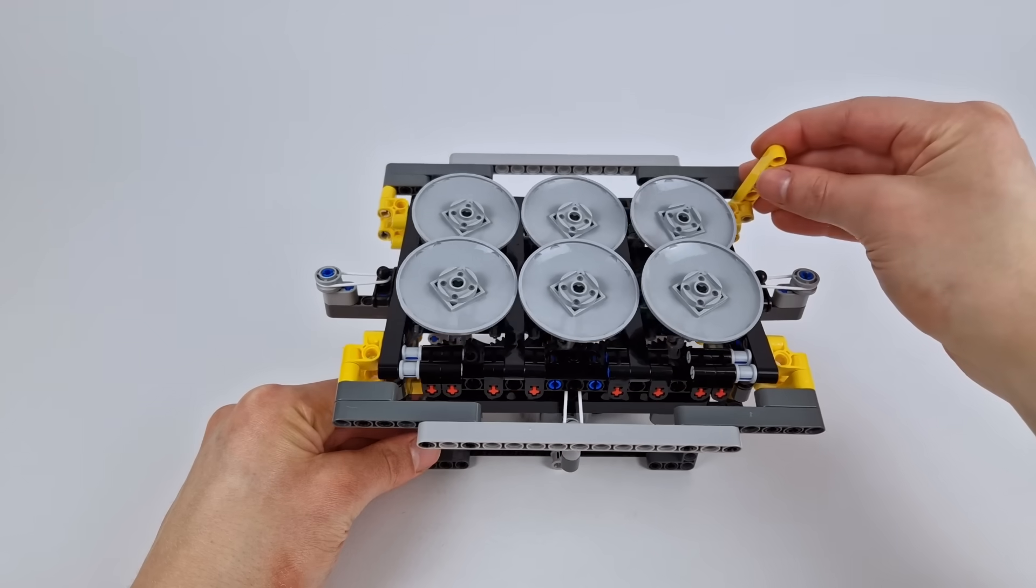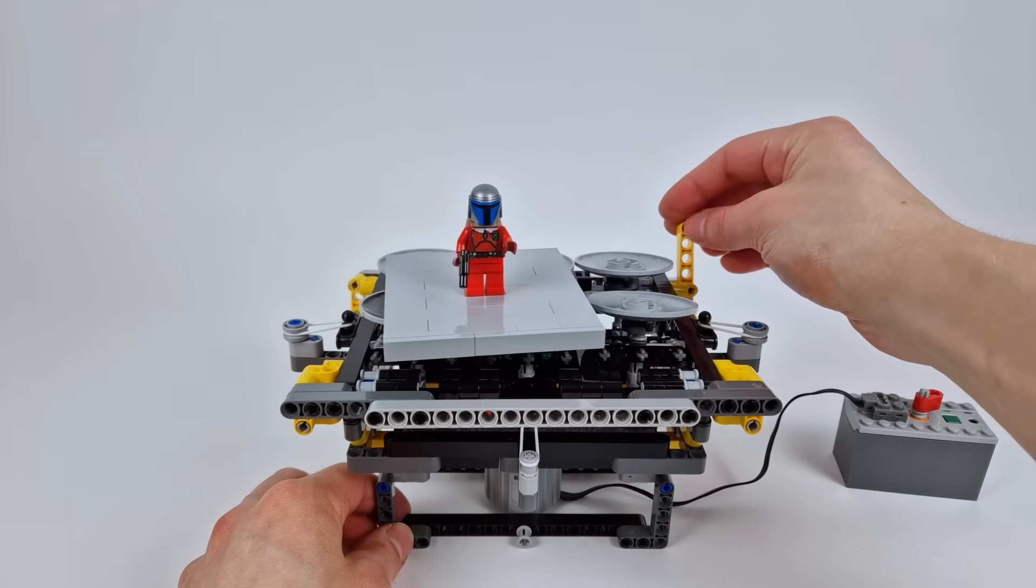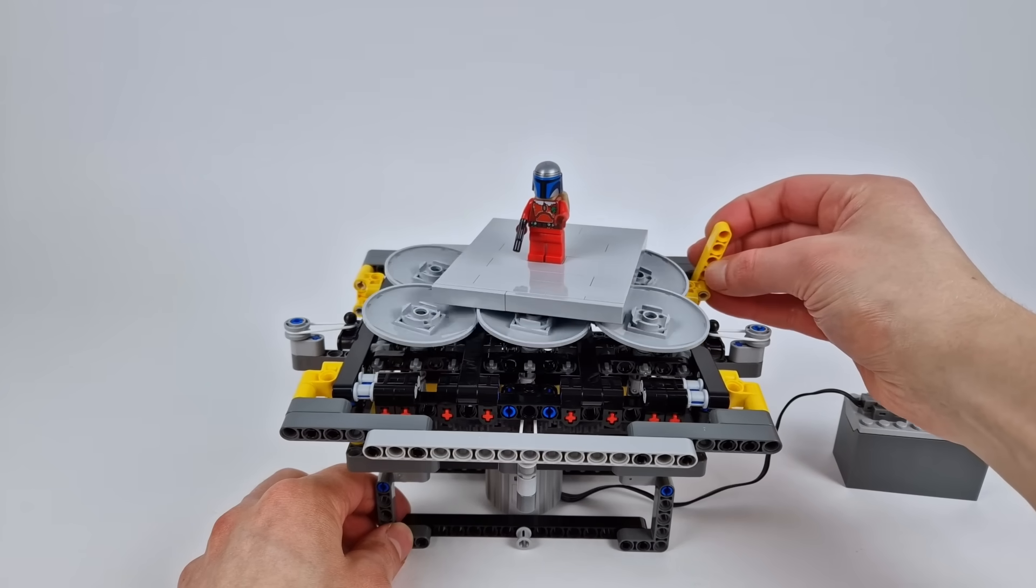A few months back, I built this interesting prototype for an omnidirectional treadmill. Depending on the angle I tilt these rotating discs, the platform on top can move in any direction.